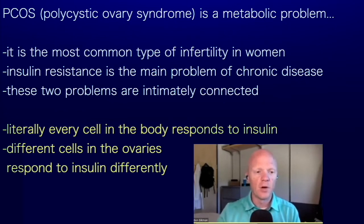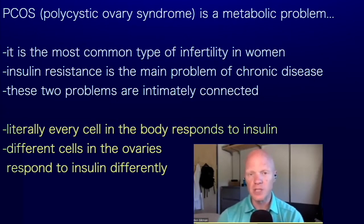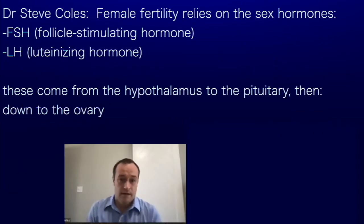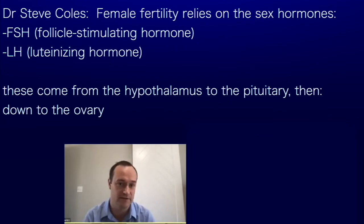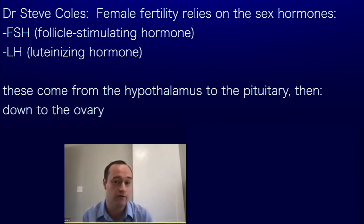To get things going with this metabolic classroom discussion, can you share with us what is the role of the estrogens — that small family of prototypical female sex hormones — in female fertility? Female fertility really relies a lot on the female sex hormones, particularly FSH and LH, which is follicle stimulating hormone and luteinizing hormone. Those come from the hypothalamus to the pituitary, then down to the ovary, and that's an axis that's really important in reproductive health.